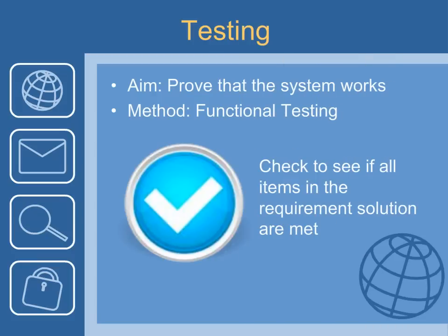As far as the testing goes, the aim is just to prove that the system works, and we call this functional testing — that's what it's usually called in this respect. We'll go into different elements of testing later on. It's basically just to check that it does what it's supposed to do, in other words it meets the criteria, it meets what it says it's supposed to have done as regards the requirements. After the system's been built and implemented, that's when you test it to see if it meets the criteria.